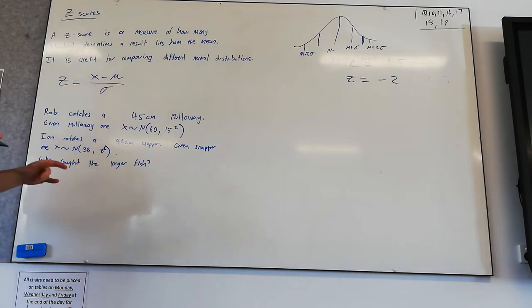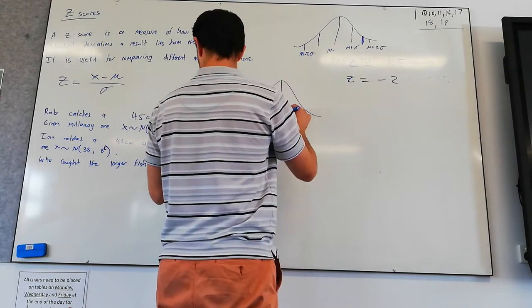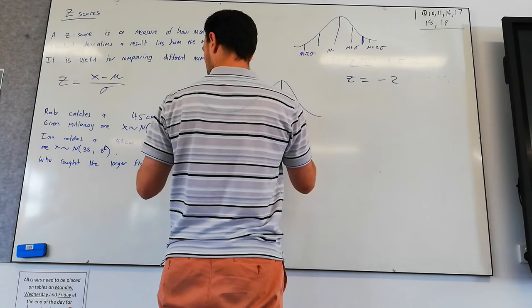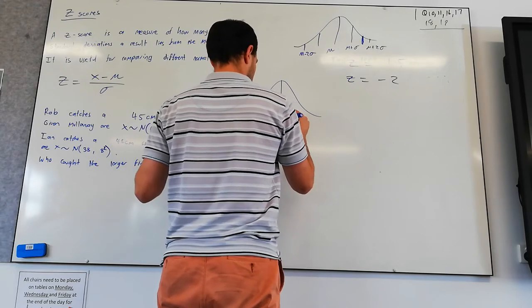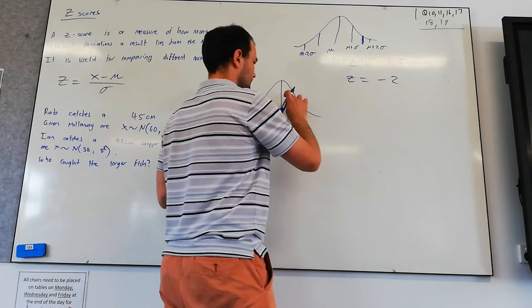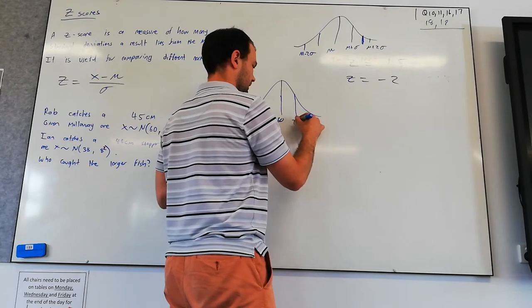Because both are normal distributions, we've got the distribution of mulloway, which has a mean of 60 and a standard deviation of 15. It's probably pretty clear from this example, so I'll mix those numbers up. But we could go 60, 75,